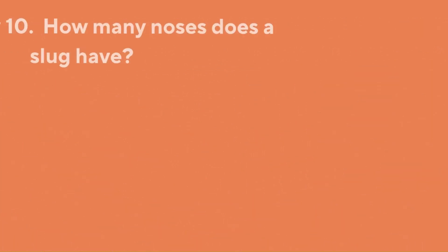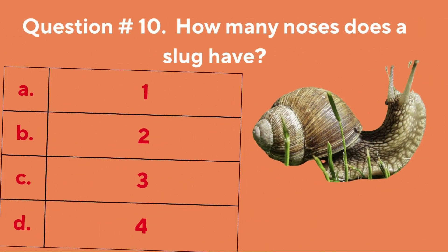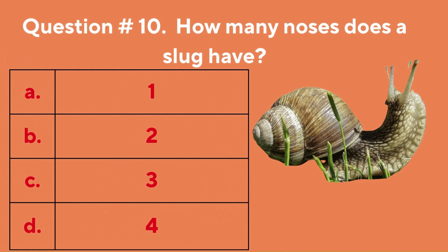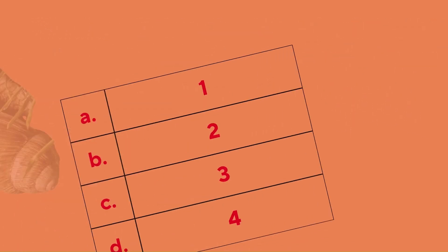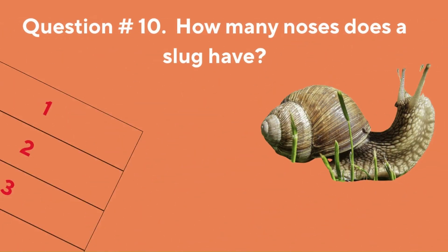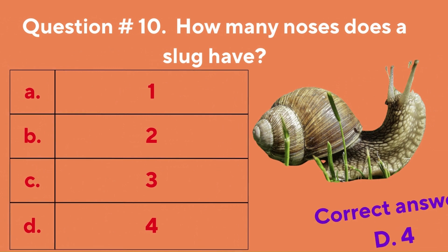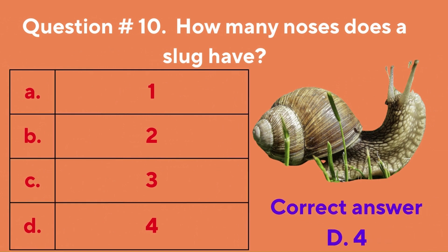Question number ten: how many noses does a slug have? A. 1, B. 2, C. 3, D. 4. The correct answer is D. 4.